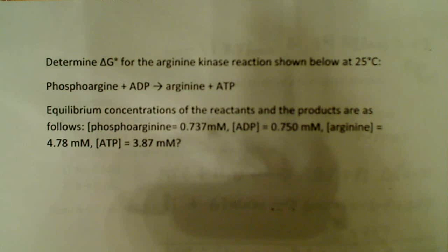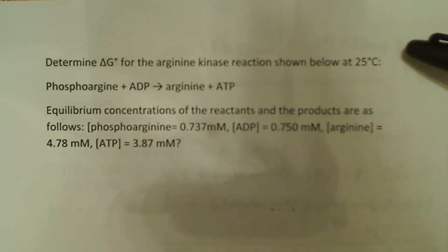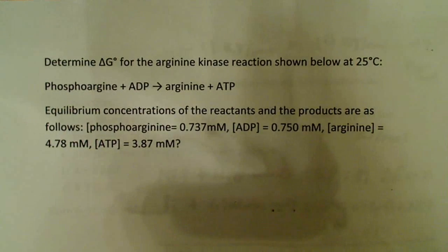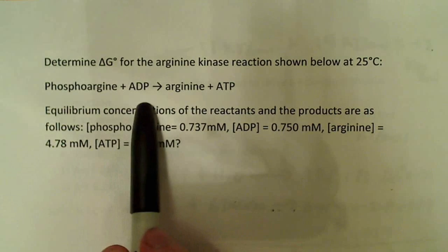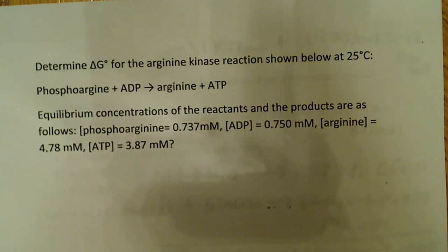In this video I want to calculate the standard free energy change for the arginine kinase reaction. The problem says: determine ΔG° for the arginine kinase reaction shown below at 25 degrees Celsius. The reaction is phospho-arginine plus ADP goes to arginine plus ATP. The equilibrium concentrations for the reactants and products are as follows.